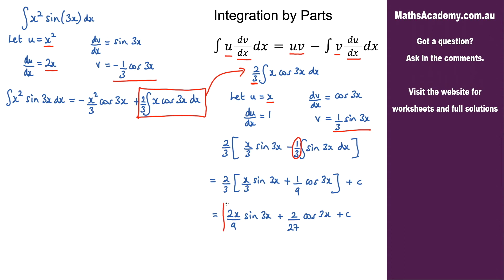Now I can substitute this back into the original expression. Before I go further, I notice I've got a third here, ninths here, and 27ths here, so I'm going to get a common denominator and make everything over 27. I'll multiply this one by 9 over 9, so I get negative 9x squared over 27 cosine of 3x plus the substitution.